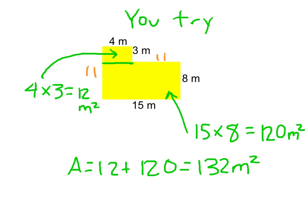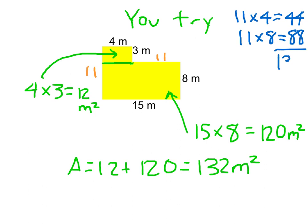If you had drawn a vertical dividing line instead, this piece would be 11 times 4, which is 44, and the other piece would be 11 times 8, which is 88. Adding those together also gives 132 square meters. It didn't matter where you drew the dividing line — horizontal or vertical — you still end up with the same area. That's all about complex figures, and we'll keep working on it.